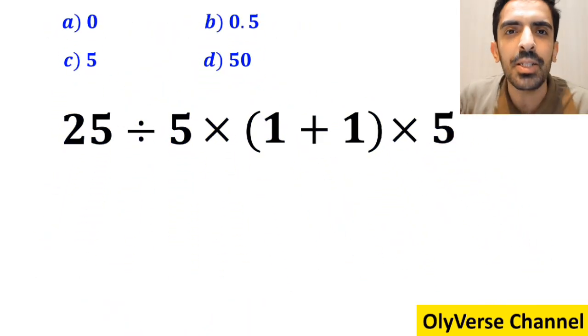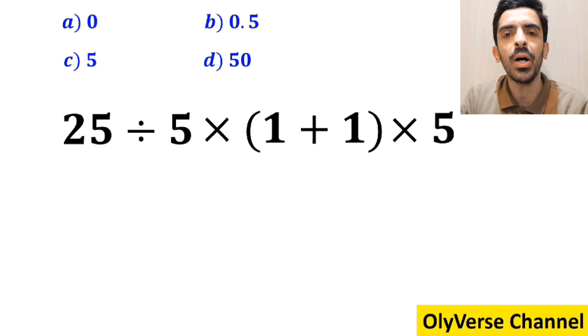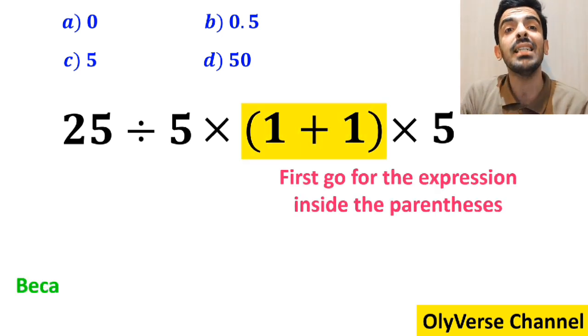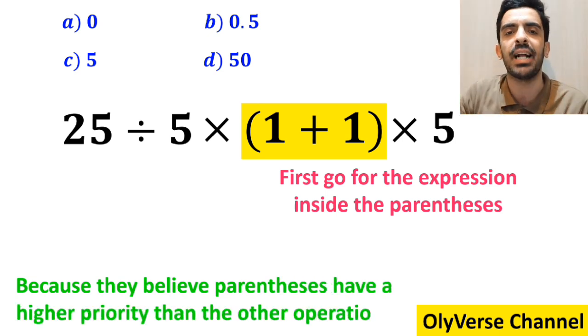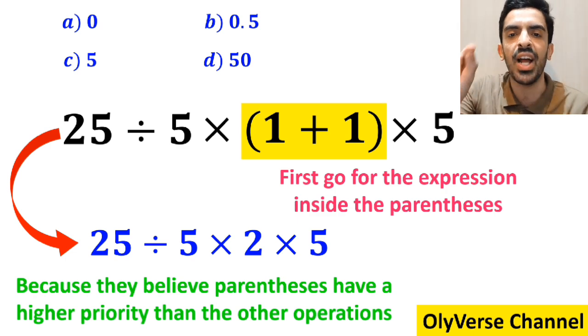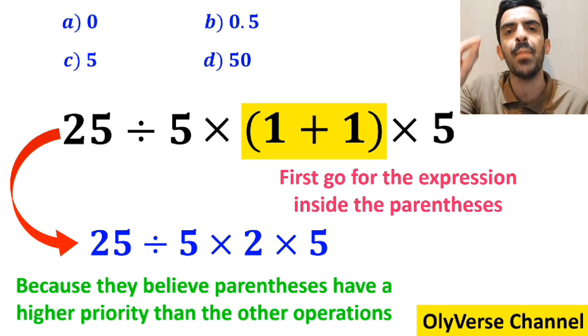Let's go step by step and solve it together. Many people when trying to solve this question first go for the expression inside the parenthesis, because they believe parenthesis have a higher priority than the other operations. So they simplify this expression to 25 divided by 5 times 2 multiplied by 5.